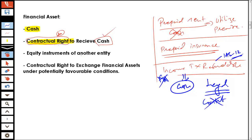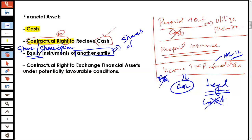The third thing is equity instruments of another entity. What do I mean by equity instruments of another entity? Whenever we talk about the equity instrument, that would mean shares, that would mean share options — that is what is considered to be equity instruments. So if you invest in shares of another company, then it is actually going to be considered as an equity instrument of another entity.